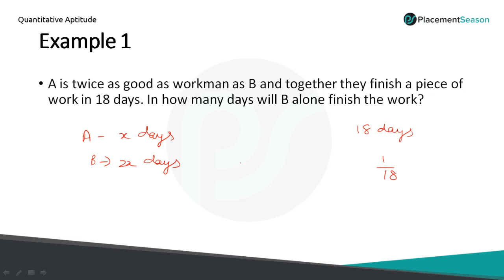Calculate one day work of A is 1 by x, one day work of B is 1 by 2x, which equals 1 by 18. That is their one day work of A and B together. Find the value from this, take LCM.